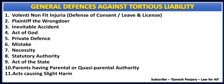There are 8 major general defenses available against tortious liability. The first 8 are: volenti non fit injuria, plaintiff the wrongdoer, inevitable accident, act of God, private defense, mistake, necessity, and statutory authority. Other than these, there are a few additional general defenses like act of state and parents having parental or quasi-parental authority.